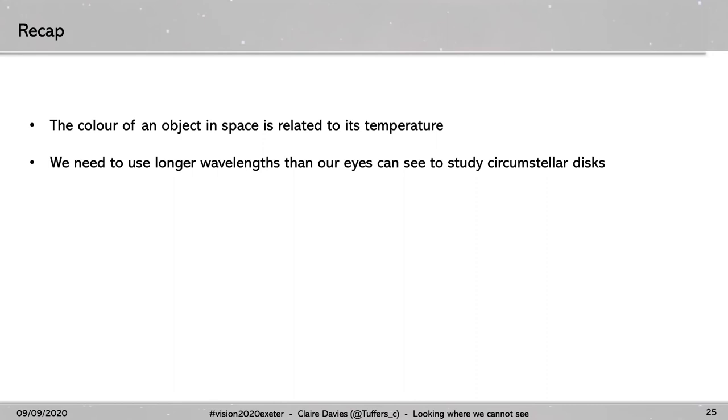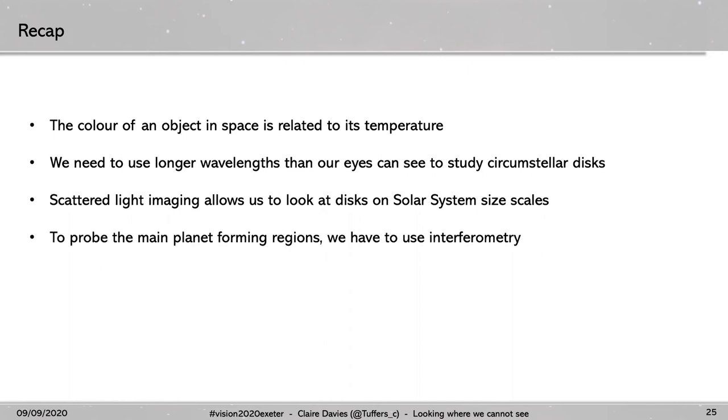So that's where I'd like to leave things. I hope that's given you an overview of some of the hardware and the software we use and develop as astronomers, and some of the challenges that we have to overcome in designing our tech. Most importantly, I hope I've emphasized the following. That the color of an object in space is related to its temperature. That we need to use longer wavelengths than our eyes can see to understand and study circumstellar disks. That scattered light imaging allows us to look at disks on solar system size scales by making use of the polarized light produced by scattering off the disk. To probe the main planet forming regions, we have to use interferometry. And in particular, I hope I've shown you that the way that works is quite frankly, just magic. If you're interested in finding out more about my research, you'll find more information on my web page. Thank you very much for listening. I'll take any questions now.